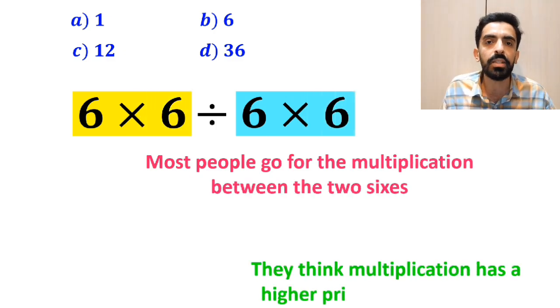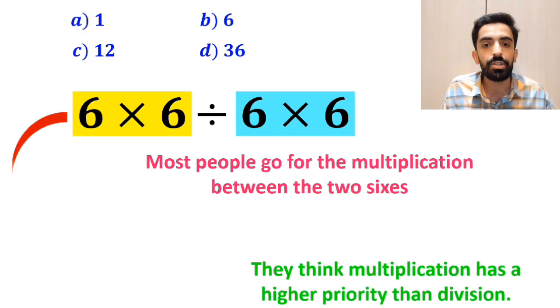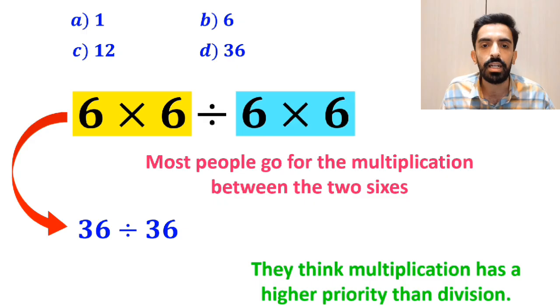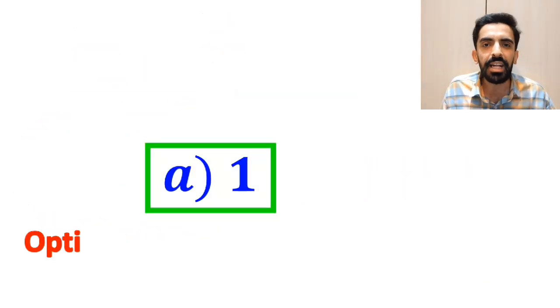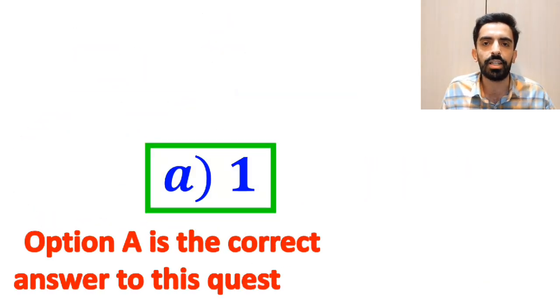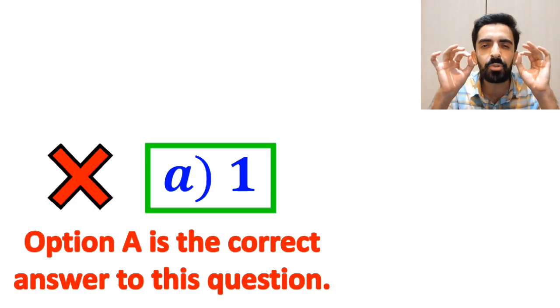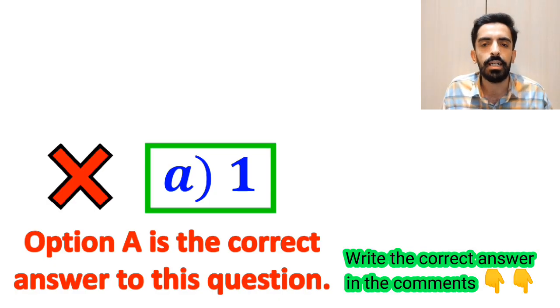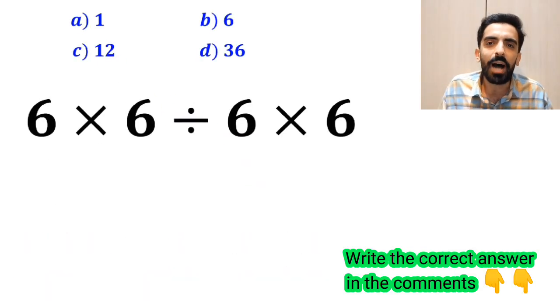So instead of this expression, they write 36 divided by 36, and in the end it gives them the answer 1. Then without any hesitation, they immediately say that option A is the correct answer to this question. But this answer is absolutely wrong.